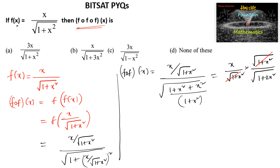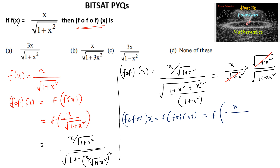Now we shall consider f circle of f circle f of x, which is equal to f of f circle f of x, which is equal to f of x upon under root of 1 plus 2x square. Let us simplify this.